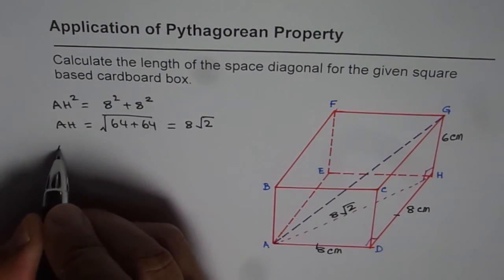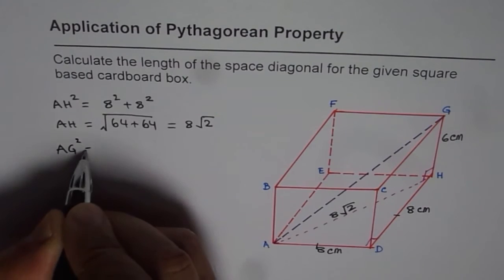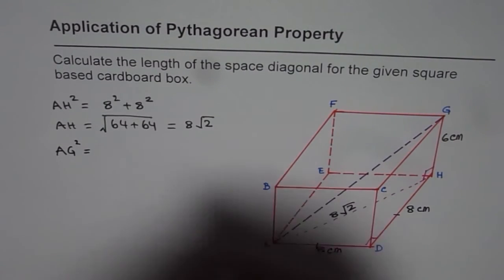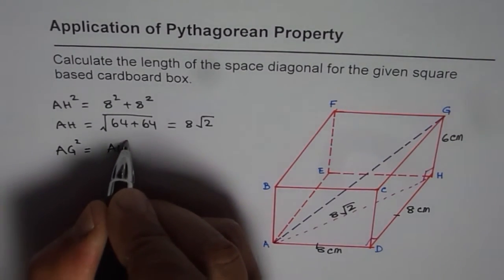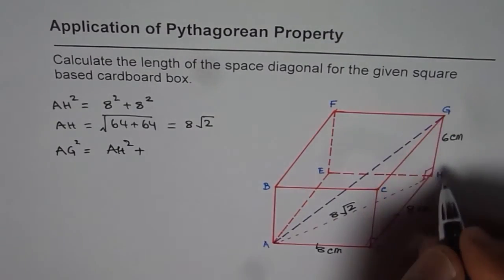Now from here AG square is equal to AH square plus GH square.